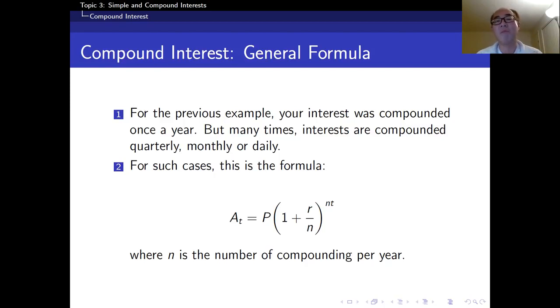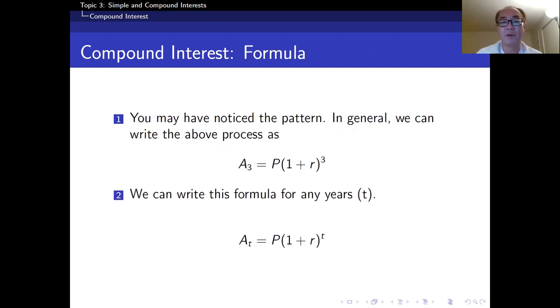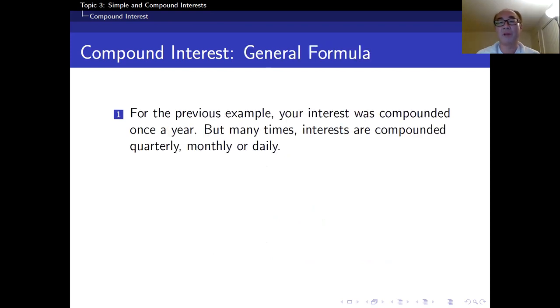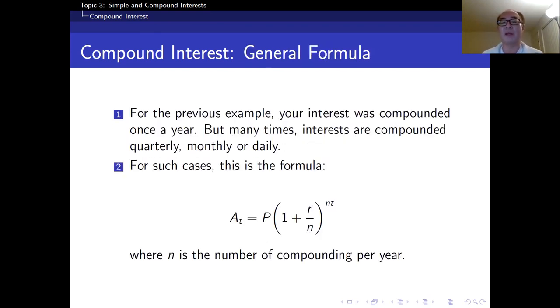And for daily, obviously, we have 365 days a year, so n equals 365. Then the power here is n times t, not simple t. The annual case is actually a special case of this formula, because previously we had n equals 1, then we get the previous formula. See, A sub t equals P times (1 + r) to the power t, but now we have n which is different from 1. That's why we have this formula: A sub t equals P times (1 + r/n) to the power nt.